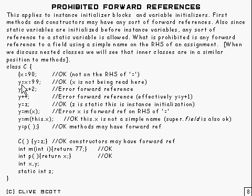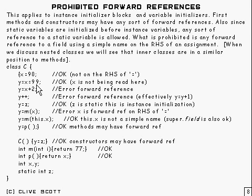What's prohibited is any forward reference to a field using a simple name on the right-hand side of an assignment. Here's a block - an initializer block. We've got x equals 90, and that's OK because x, although it's a forward reference, is on the left-hand side of the equals. Similarly, y equals (x equals 99) is OK again because x is on the left-hand side. That gets evaluated, x equals 99 gets evaluated first, and the result is assigned to y - x is not actually being read. But a straightforward forward reference to x on the right-hand side is an error and is not allowed.